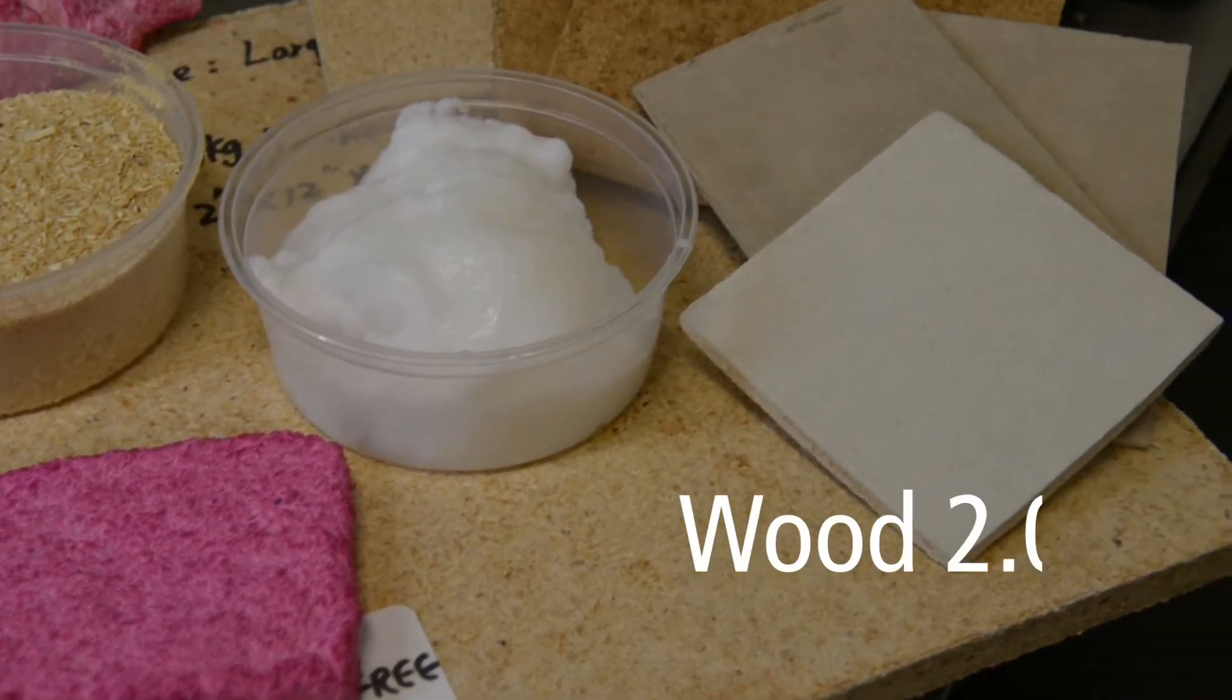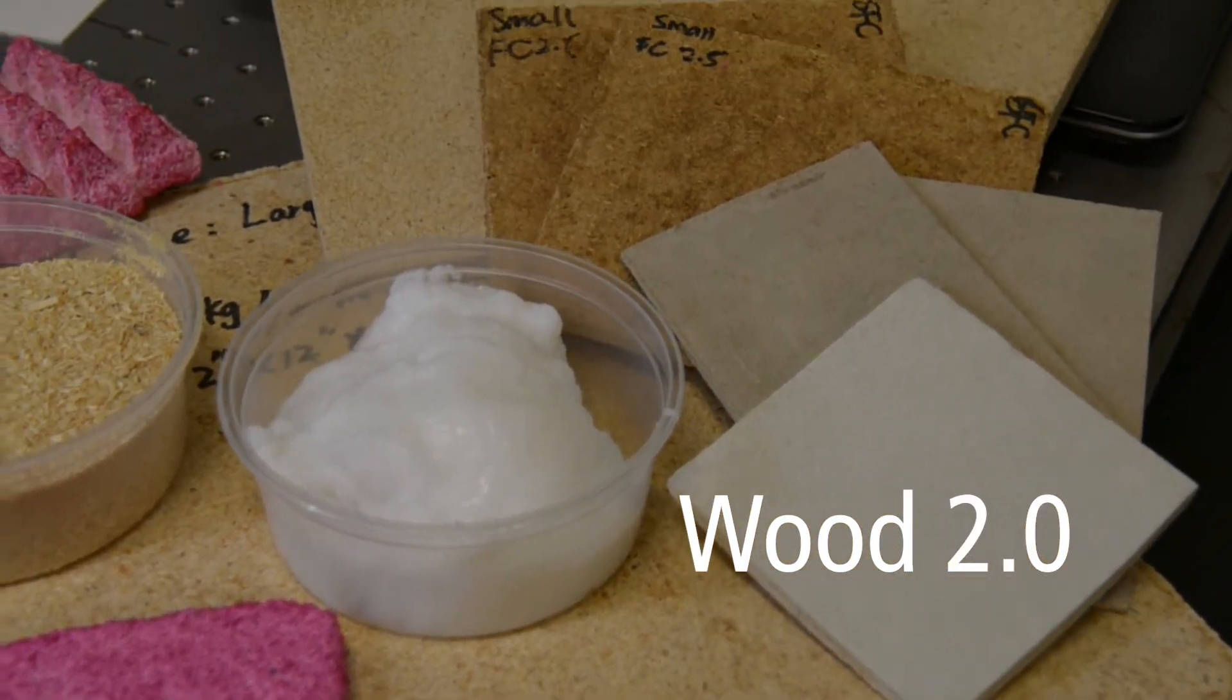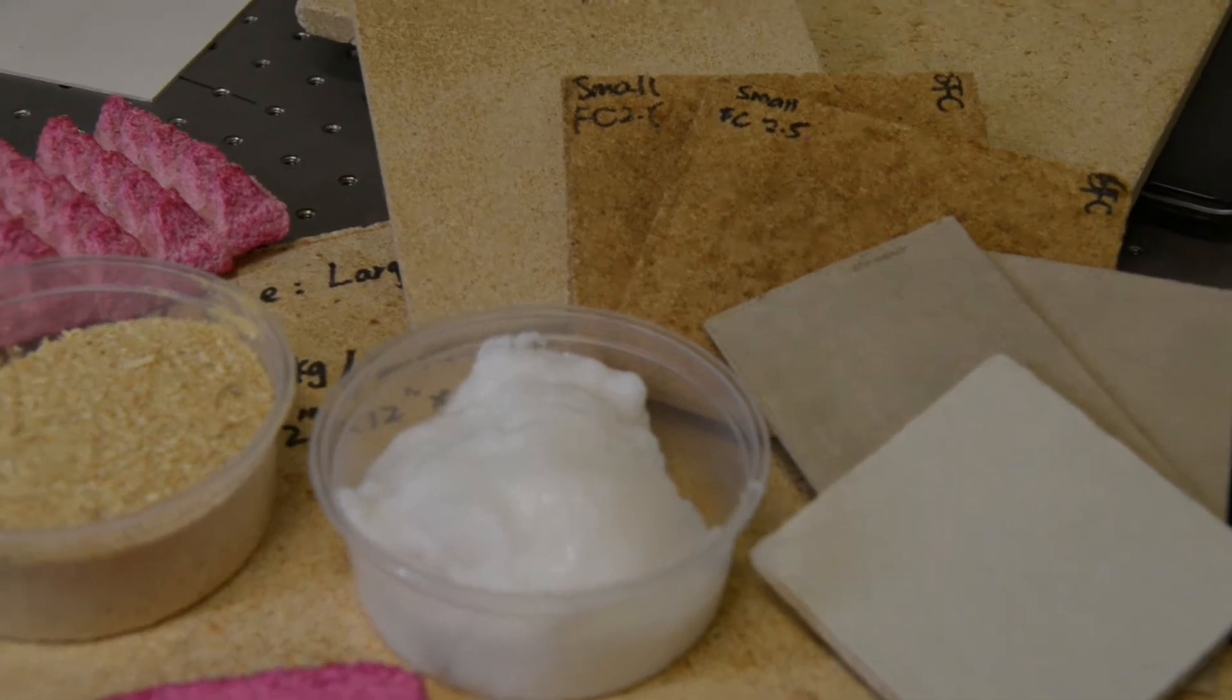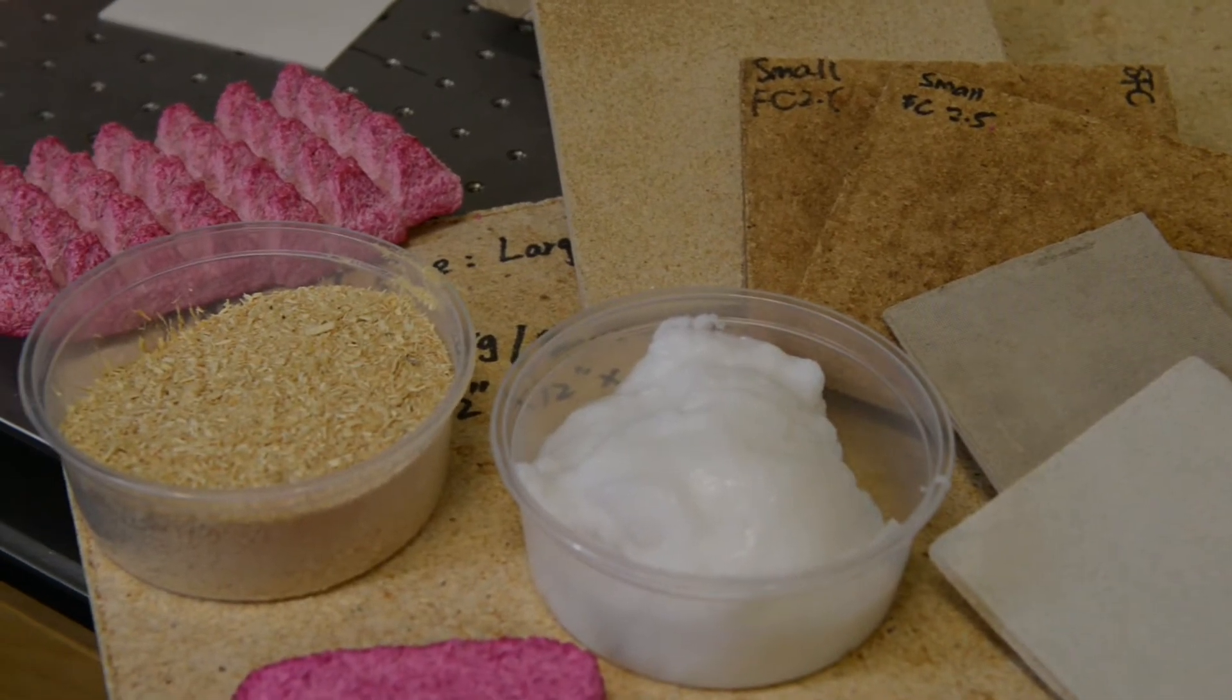Cellulose nanomaterials have been around for many years. Because they are produced in water, we need to dry them and then use them like other materials that are normally dry.